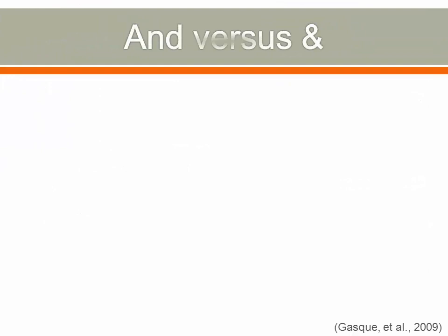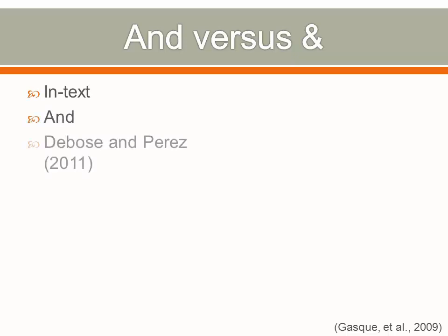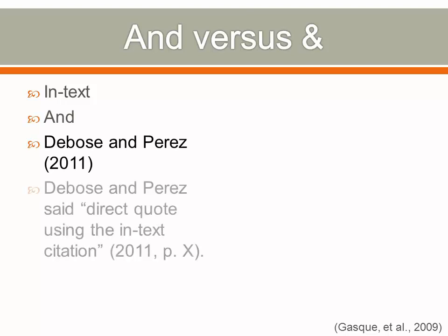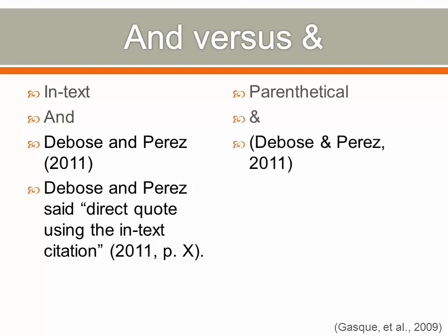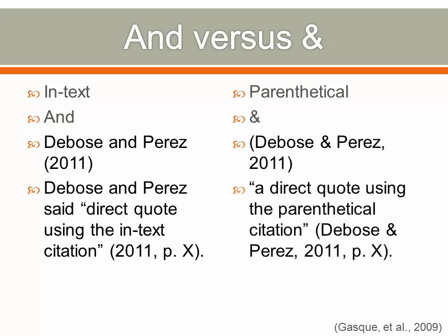Regarding "and" versus the symbol "&": when citing in-text with two or more authors, always use the written word "and." When using a parenthetical citation, you should always use the symbol "&" when citing two or more authors. In the reference section, always use the symbol "&".